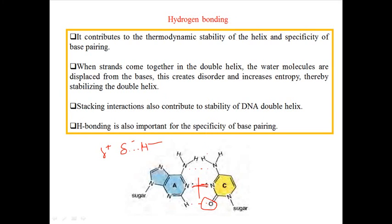When strands come together in the double helix, the water molecules are displaced from the bases. Normally bases contain water molecules, and when they come together the water molecule is displaced, giving an entropy change. This thermodynamically favors the reaction, creating disorder.